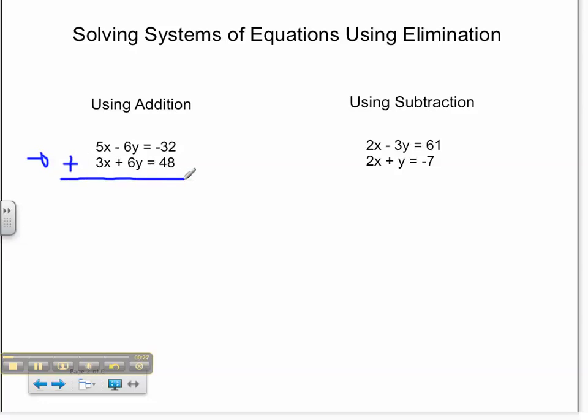I'm going to add these two problems together and combine like terms. 5x plus 3x equals 8x. Negative 6y plus 6y is 0. Negative 32 plus 48 equals 16. I know that 8x equals 16, and therefore x must equal 2. I can plug 2 in to solve.